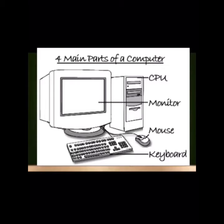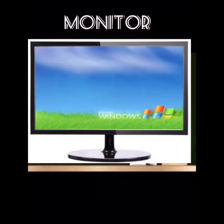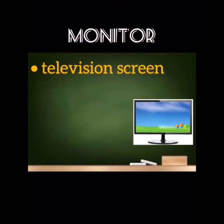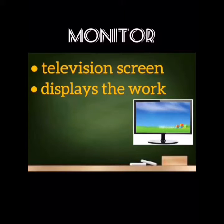Today's class we are going to see just about monitor and mouse. The first one is monitor. Everyone might have seen the monitor, right? See this picture — the monitor will look like this. We will see some features of monitor. Monitor is looking like a television screen. The function of monitor is it will display all the work that is done on the computer. For example, if I am typing something using a keyboard, I can see it on the monitor.